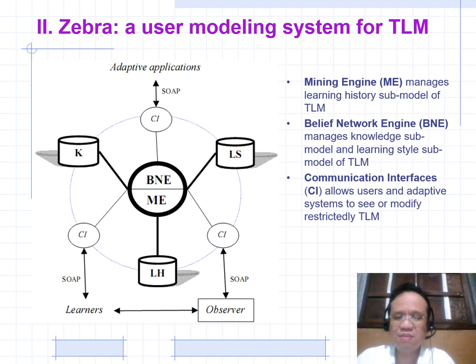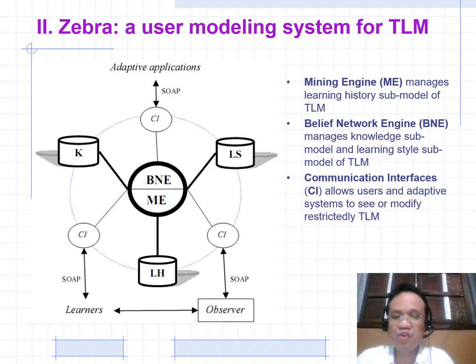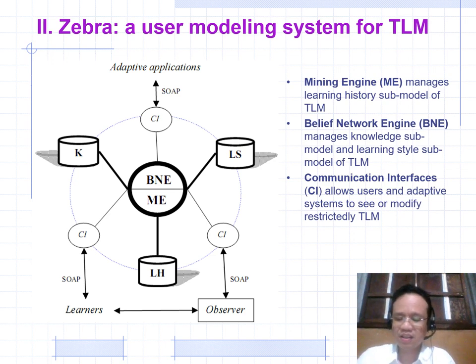The Derived Network Engine (N.E.) manages the Knowledge submodel and Learning Style submodel of TLM. The Communication Interface (CI) allows the user model and adaptors to view or modify TLM.